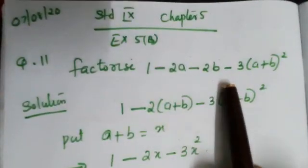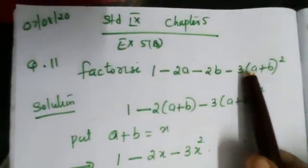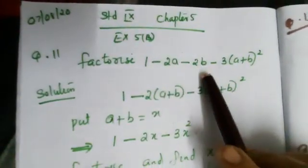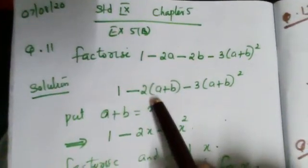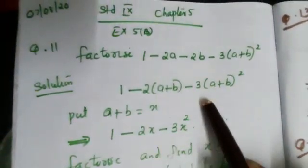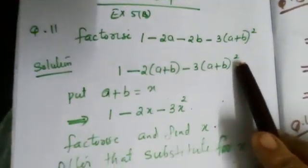Factorize 1-2a-2b-3(a+b)². From the second and third terms, take minus 2 outside. So we get 1-2(a+b)-3(a+b)².